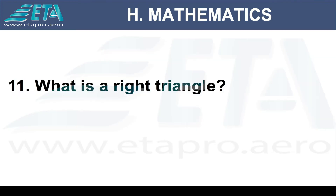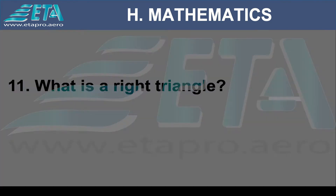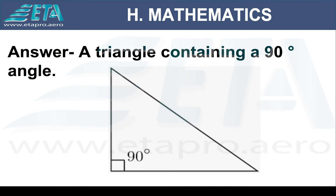What is a right triangle? A triangle containing a 90-degree angle.